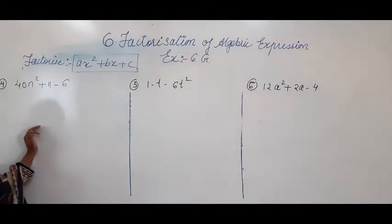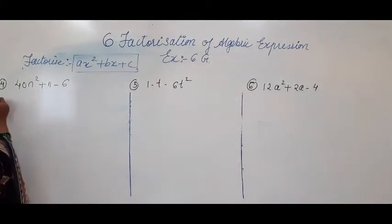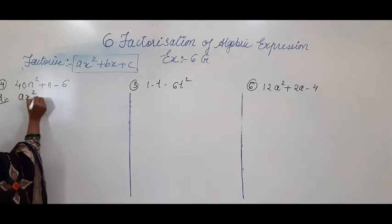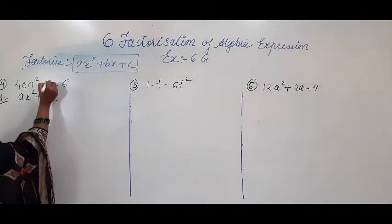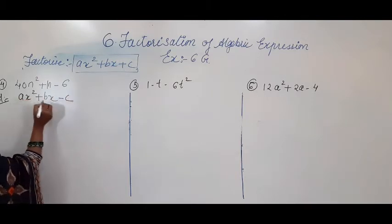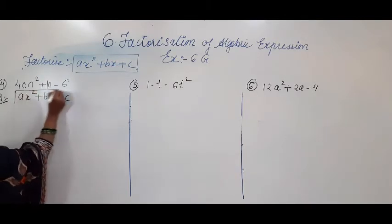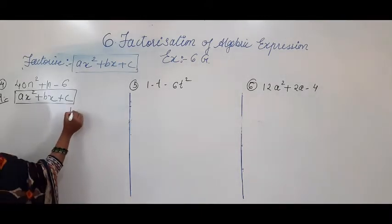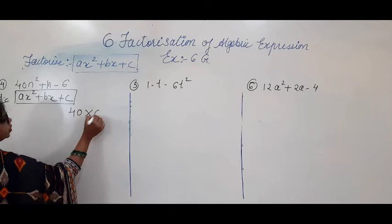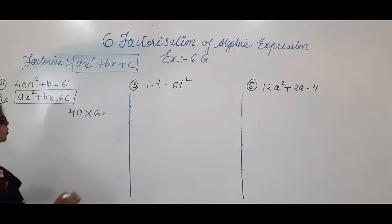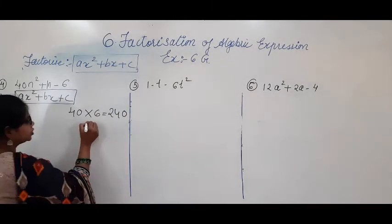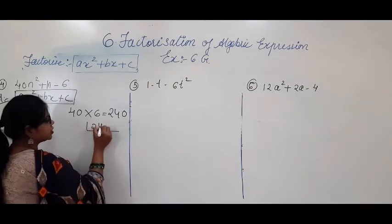Moving on to the next question: 40n² + n - 6. This is also in the form of ax² + bx + c. What you have to do: first multiply 40 into 6, you will get 240. Now try to factorize 240 to find the right factors.